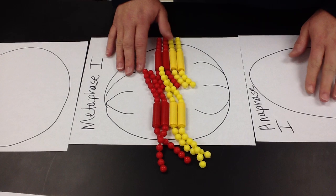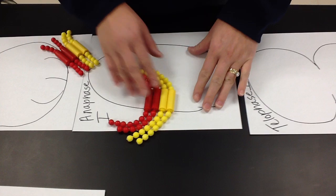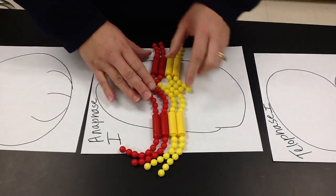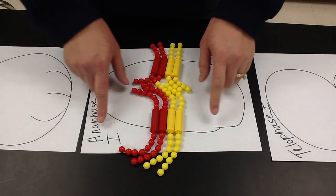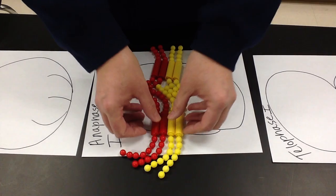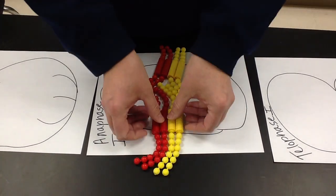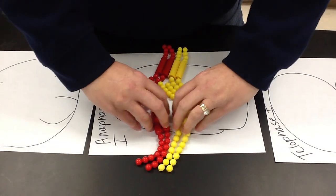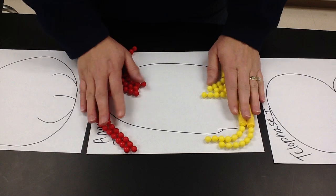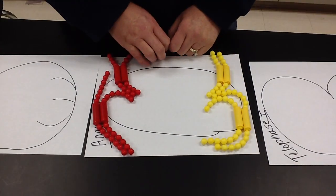Then we move on into anaphase. So I have anaphase one here. I'm going to move these down because I think it's easiest that way to keep them in the middle. And then I know anaphase, the A is going to remind me to pull them apart. So I'm going to pull the tetrads, they're still tetrads, they're homologous pairs, apart to opposite poles. Now these are apart. We no longer have tetrads anymore.